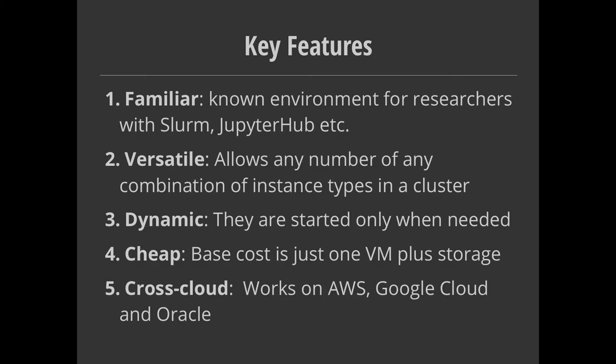It's of course dynamic — nodes only start when they're needed and get turned off again afterwards. And as I was alluding to, it's cheap. All you're paying for is the t3a.medium virtual machine, which is very, very cheap — basically one of the cheapest provided by AWS — plus whatever storage you're using in the Elastic File System, which if you're only using a few gigabytes is again very, very cheap.